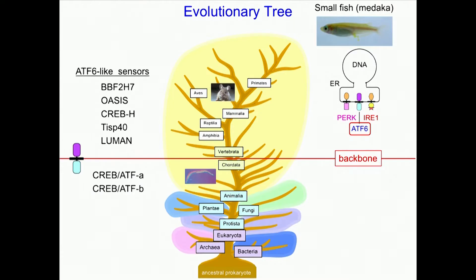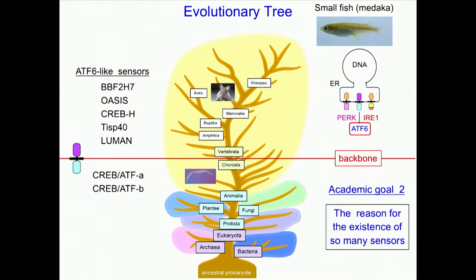Here is another difference that changed during evolution. The number of ATF6-like sensors in non-vertebrates is two, but it becomes five in vertebrates. Academic goal two is why we need so many sensors if they are simply responding to accumulation of unfolded proteins. The clue is probably their location. This green fluorescence shows the location of proteins — in this case, ATF6. ATF6 is expressed ubiquitously, that is, everywhere, because all cells need chaperones. However, the sensor CREBH is expressed only in the gut and liver, and the sensor OASIS is expressed only in the bone.